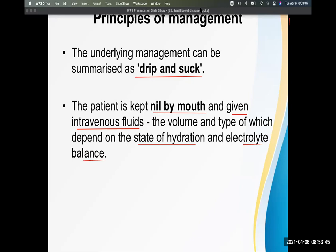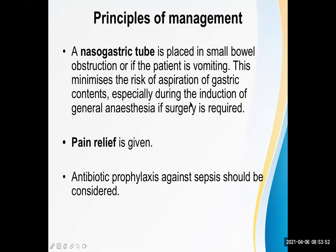An NG tube is placed in small bowel obstruction if the patient is vomiting. This minimizes the risk of aspiration of gastric contents, especially during induction of general anesthesia if surgery is required. The stomach should be empty before surgery to avoid aspiration, which can lead to aspiration pneumonia and death.